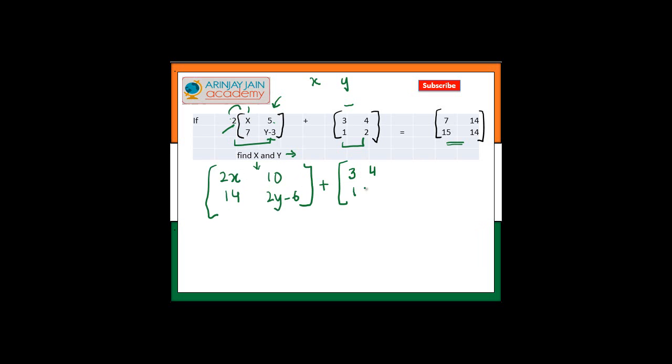Plus 3, 4, 1, 2. Now if I solve the left-hand side, because I need to add two matrices, the order of the matrix is the same. This is 2 by 2, 2 by 2. I can add the corresponding elements. So I get 2x plus 3, 10 plus 4 gives me 14. 14 plus 1 gives me 15. And here 2y minus 6 plus 2 gives me 2y minus 4. So my left-hand side is solved to get a single matrix.